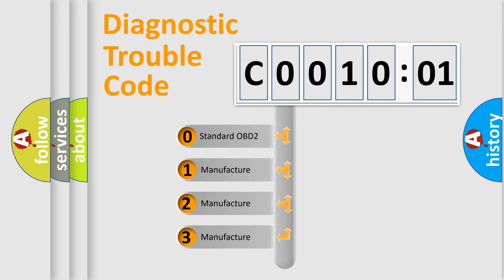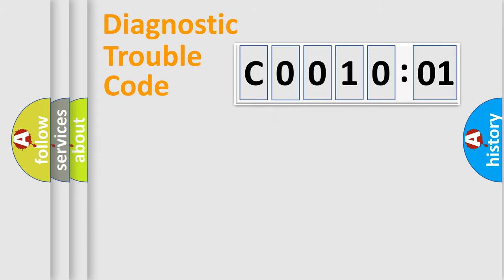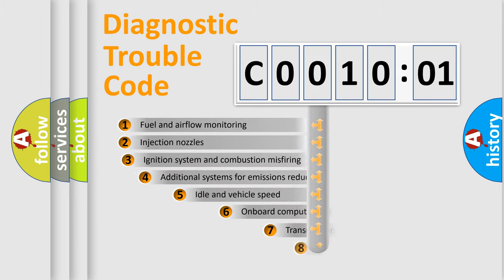If the second character is expressed as zero, it is a standardized error. In the case of numbers 1, 2, 3, it is a manufacturer-specific expression of the car-specific error.